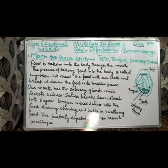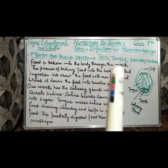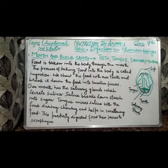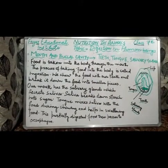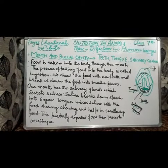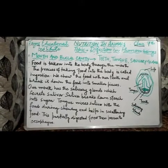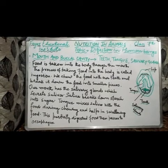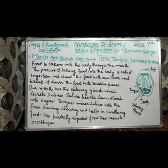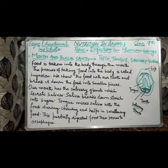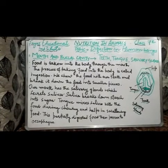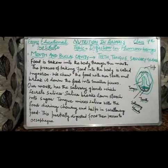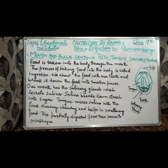So students, what happens in the mouth? We have teeth, tongue, and salivary glands. The salivary glands secrete saliva. You know what saliva is — sometimes when we see or smell tasty food, our mouth waters. That fluid is saliva, which is secreted by the salivary glands.